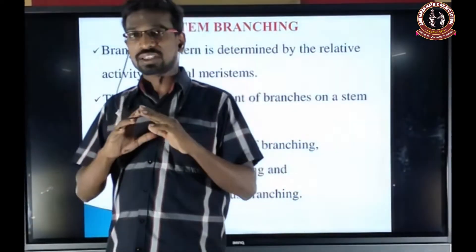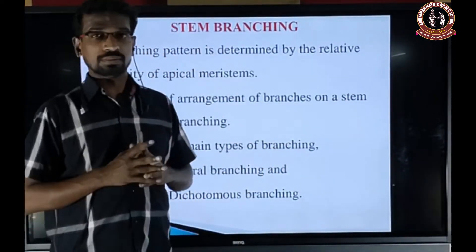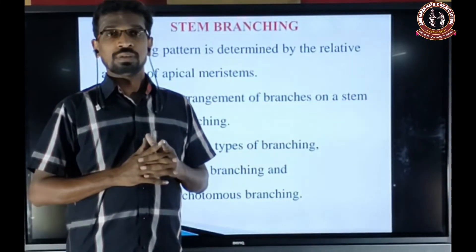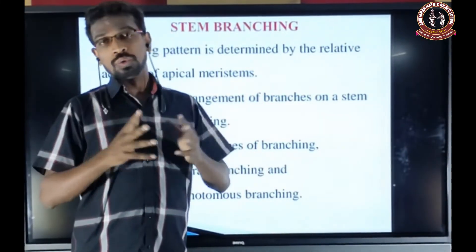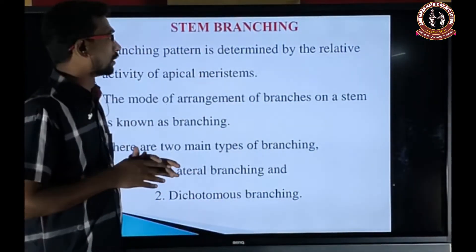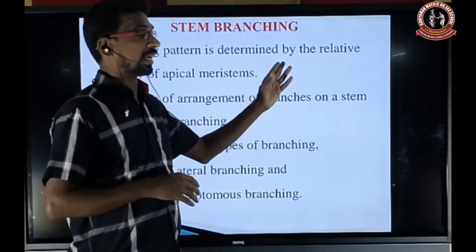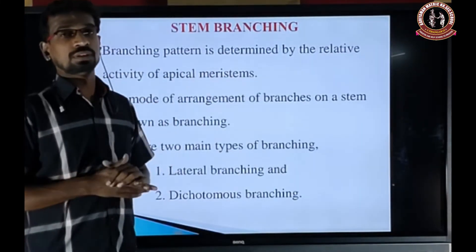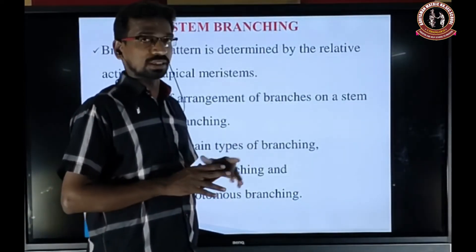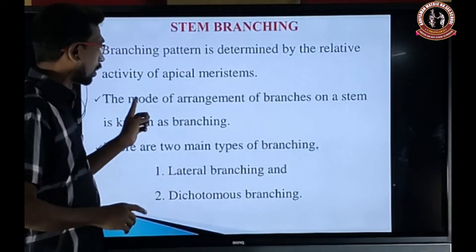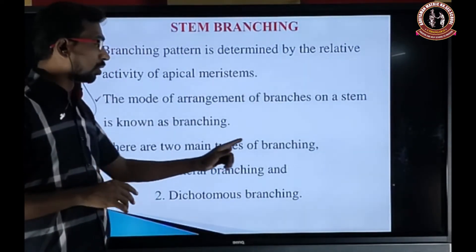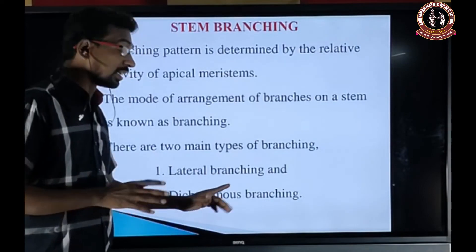Now we will talk about stem branching — how branches occur and whether their growth is limited or unlimited. The branching pattern is determined by the relative activity of the apical meristem. The mode of arrangement of branches on the stem is known as branching. There are two main types: lateral branching and dichotomous branching.